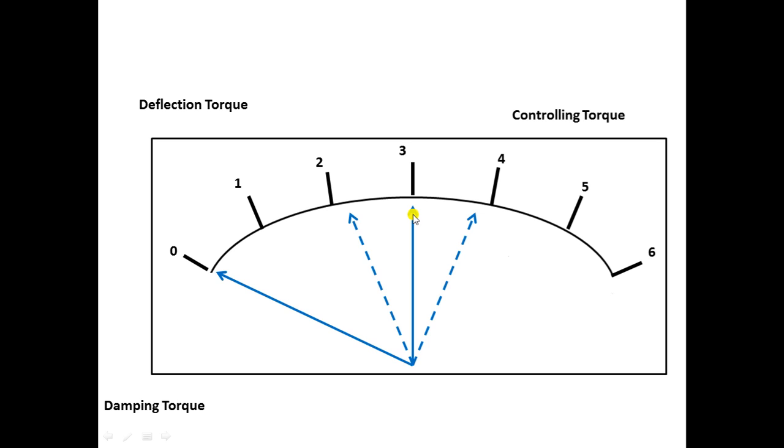These are the three systems and their respective torques present in an instrument, which together enable the instrument to give us the reading of the quantity being measured.